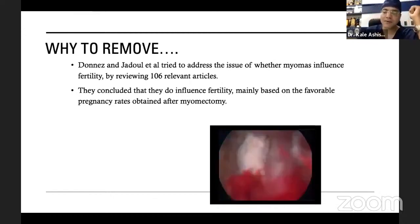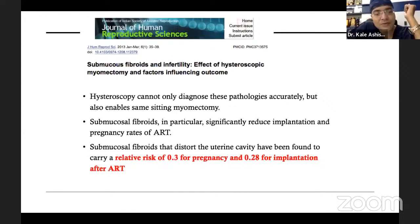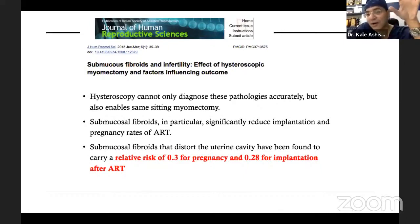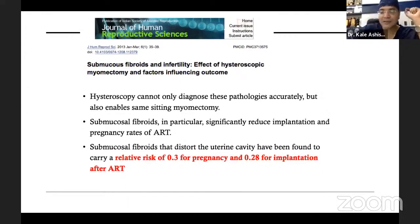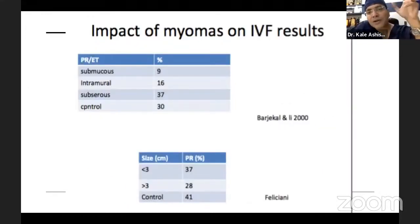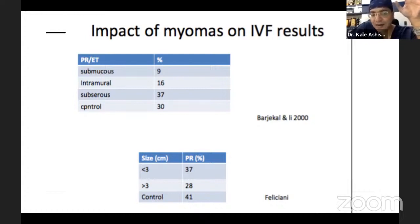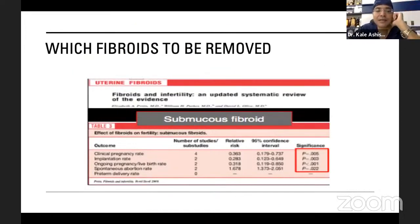Studies show submucous fibroids disturbing the uterine cavity and intramural fibroids near the myoendometrial junction have a negative impact on continuation of pregnancy. If the myoma is more than 3 centimeters, pregnancy rates are 37% lower. If the myoma size is less than 3 centimeters, pregnancy rates are higher. These fibroids require careful consideration.